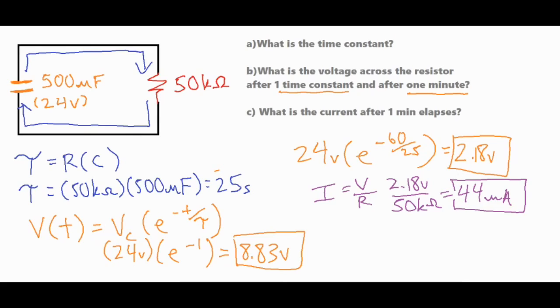Now we'll definitely choose that way given the numbers that I have already solved for because it's just a simple quotient of these two numbers. But if you didn't have those you can use your formula for the current with respect to time which is I naught times e to the negative t over tau. In that case you would find the initial current which would be the initial voltage divided by that resistance, so 24 divided by 50,000 times e to the negative 60 over 25.